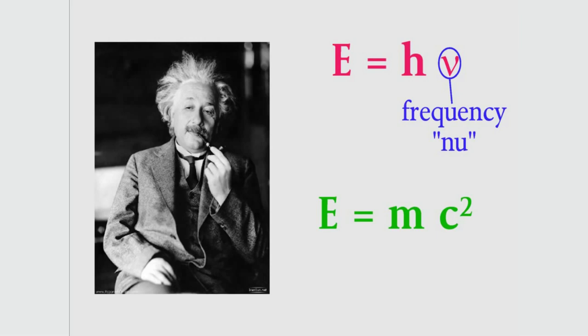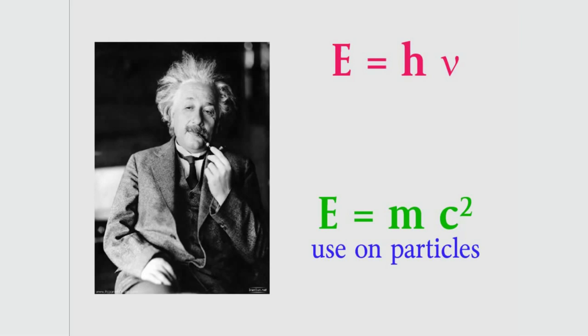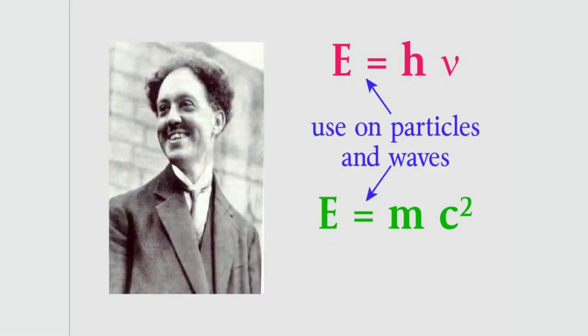De Broglie noticed that we used the second equation to understand the energies of particles, but the first equation is for the energy of light, which up until Einstein, people usually thought of as being a wave. So de Broglie had a new idea. He thought, if particles can act like waves, then both these equations should apply. We shouldn't think that one equation works only for waves, and the other one works only for particles. If an electron can act like a wave or a particle, then both equations should give its energy.